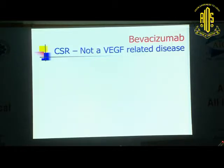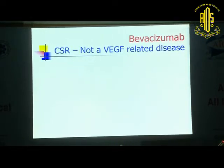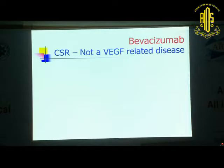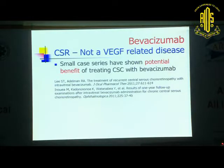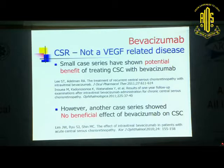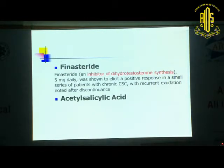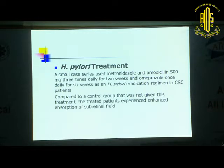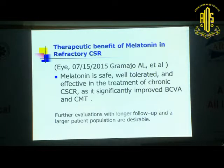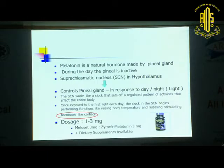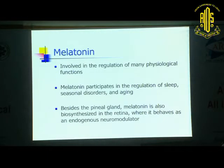Avastin — wherever nothing works, people try Avastin as if it's the messiah for everything. But CSR is not a VEGF-related disease. There have been reports of around 10-15 percent improvement, which could be just anecdotal — meaning spontaneous improvement. Some small series show potential benefit, but another series shows no beneficial effect of Avastin in CSR. Similarly, ketoconazole, H. pylori treatment, and melatonin have all been tried, again based on the steroid theory.